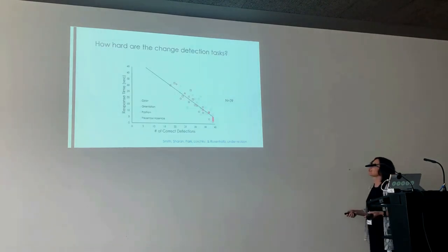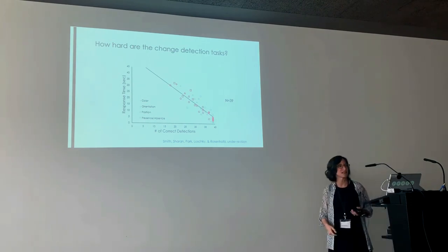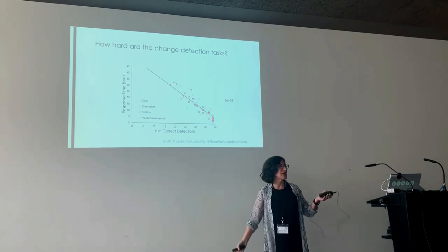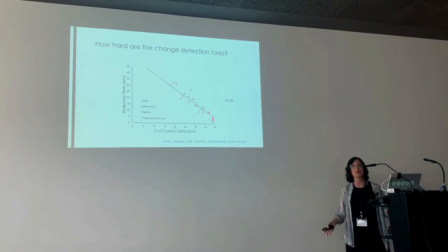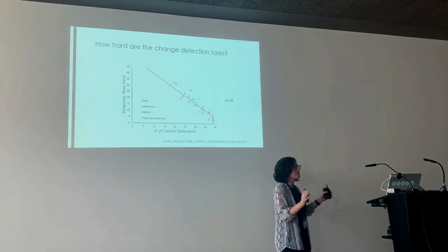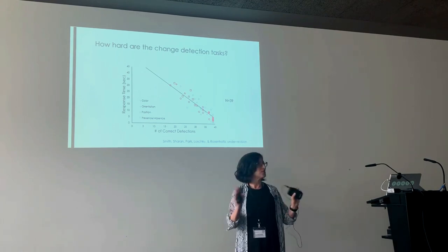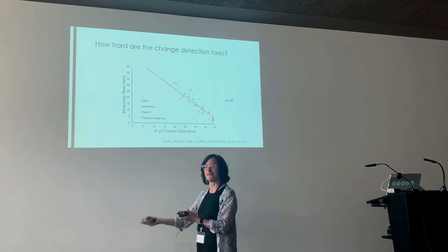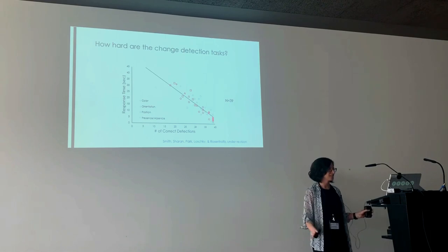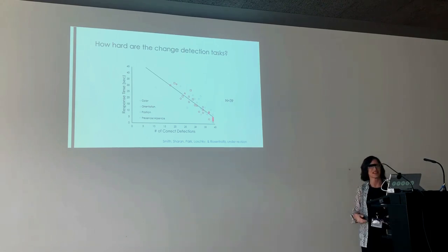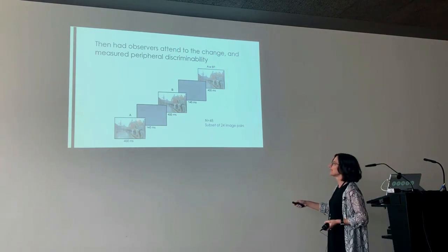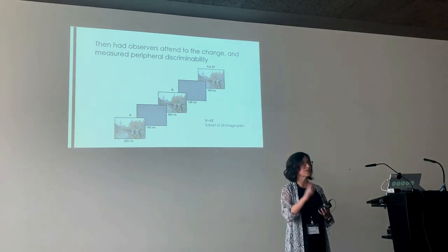Each symbol is a different change detection pair, with different kinds of changes indicated by symbol shape. There really is quite a range of how difficult change detection is — we often see the hard examples in demos, but there's quite a range. Then we tell people what the change is, show it to them clearly with no gray in between so they know what and where the change is. We then show them the image pair in a three-interval task and ask whether the third interval matches the first or second — critically, forcing them to fixate away from the change at different distances.